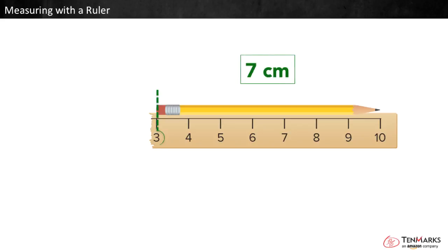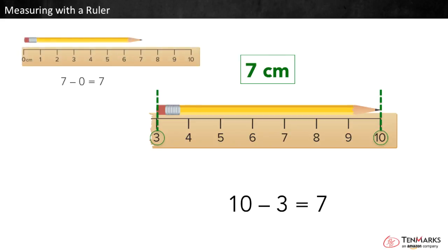Notice that the two ends line up with three and ten. The difference between ten and three is seven. Ten minus three equals seven. When the pencil lined up with zero and seven, the difference between the ends was also seven. Seven minus zero equals seven.